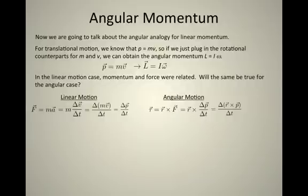That is equal to the change in R cross p over t. And as long as the product R cross p was equal to angular momentum, we would have torque is equal to the change in angular momentum divided by the change in time.